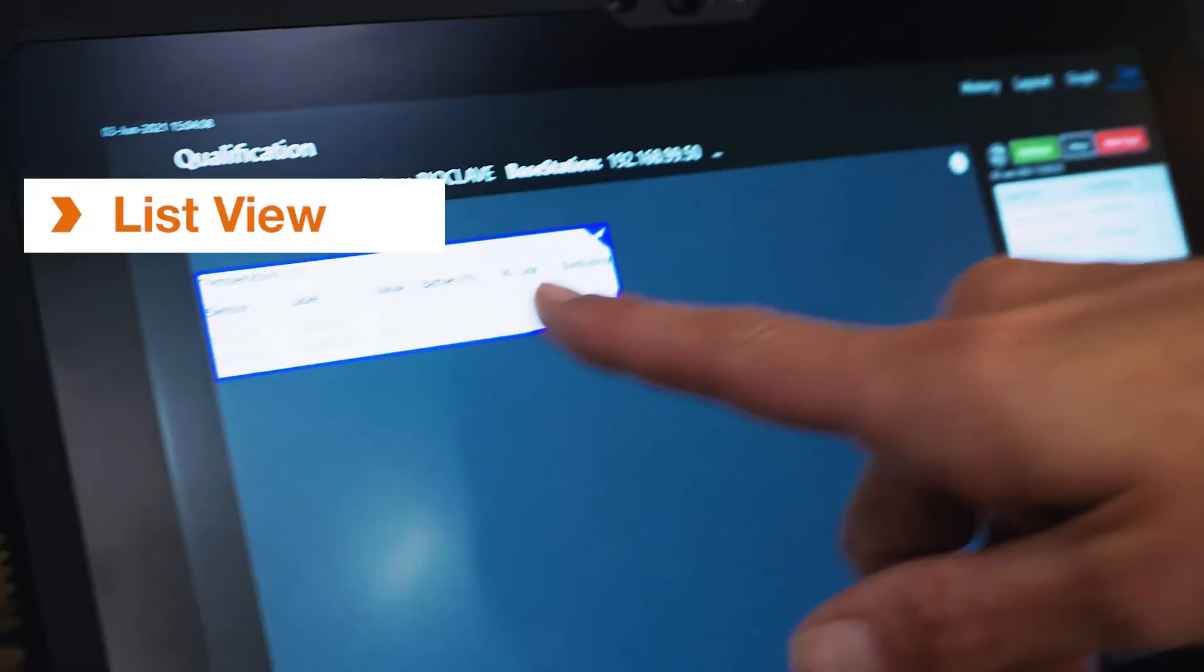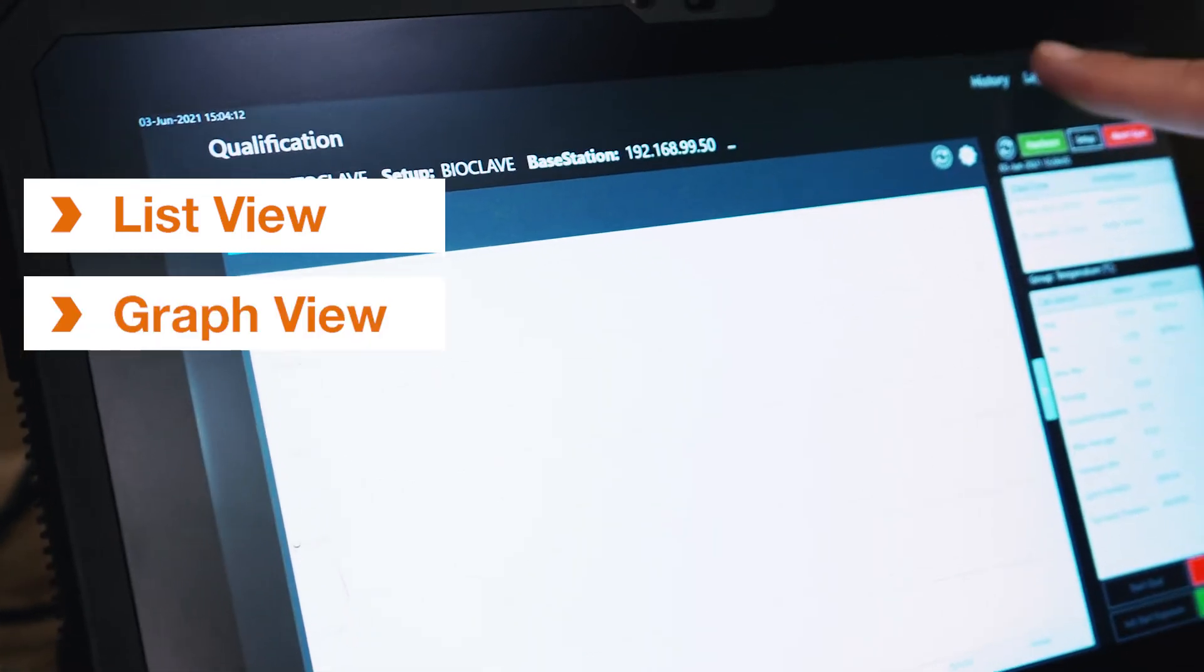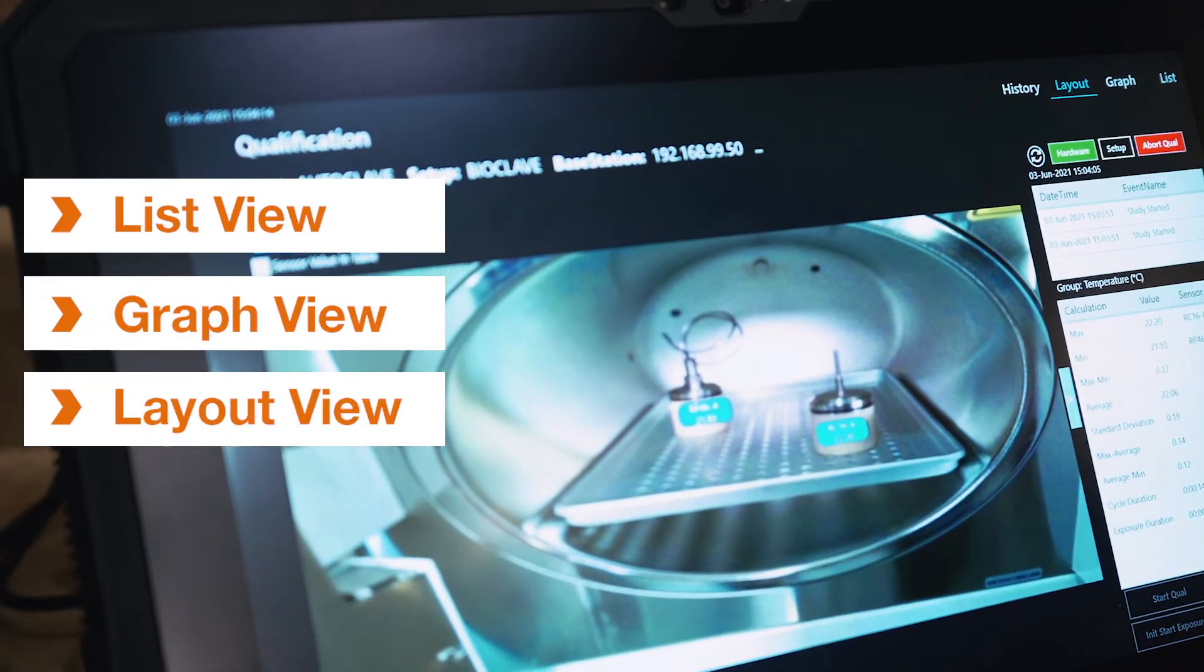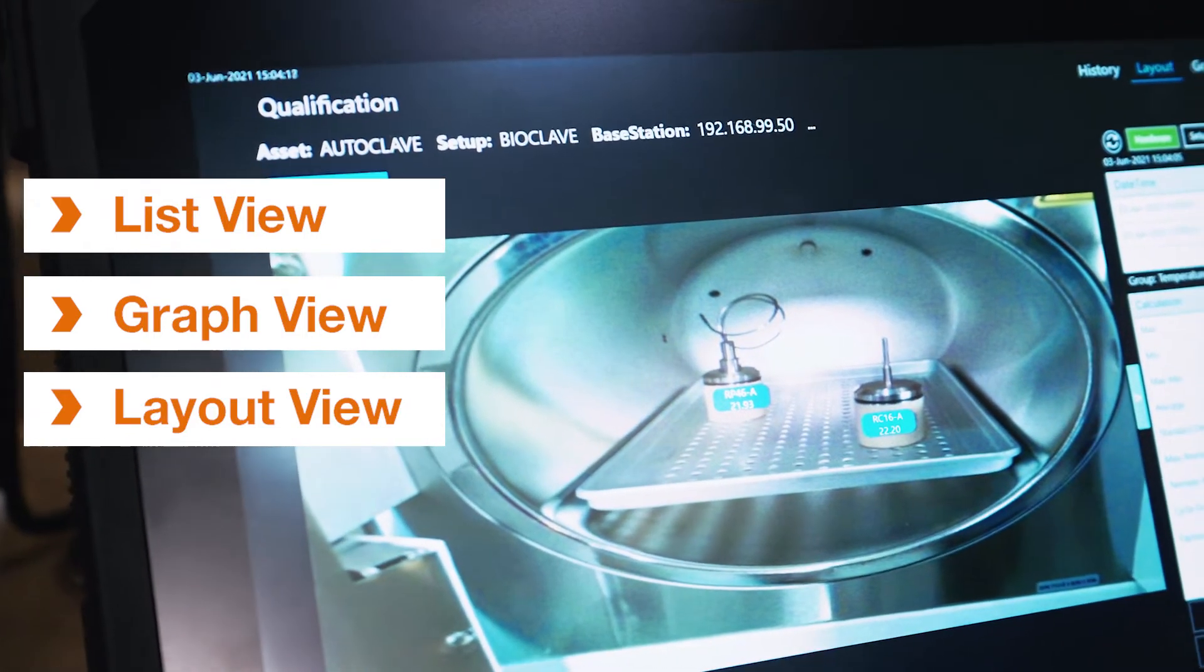I have my list view. I have the graph view. I have the layout view. You can see the two loggers. They have their serial number and the real-time data temperature that's inside.